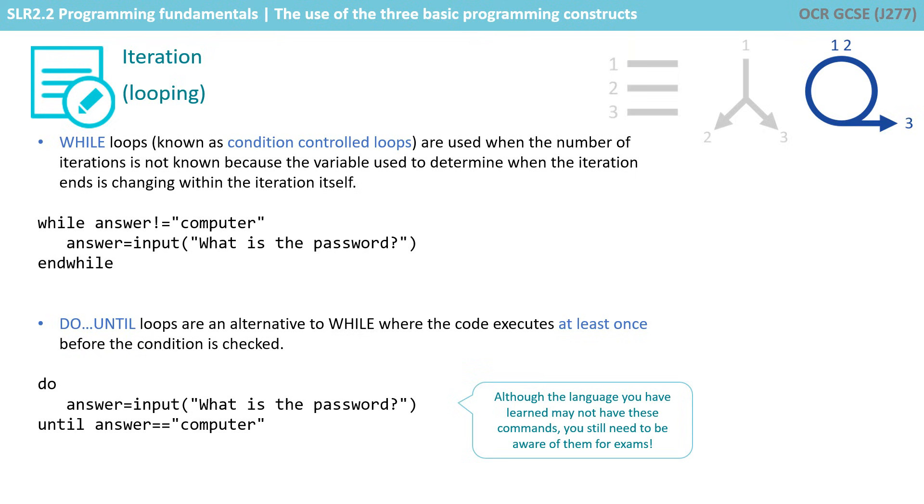Just carefully look at the difference. The top one says while answer is not equal to computer. Well, if the very first time you hit that line, it's not equal to computer, then you'll never run the code inside the while loop. So when the statement is checked at the top, the code has the possibility of never being run.